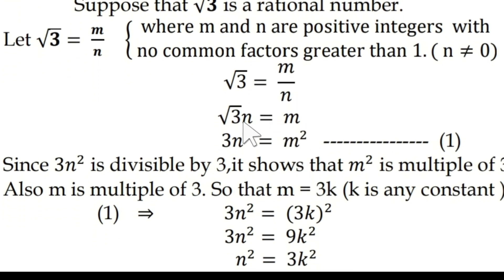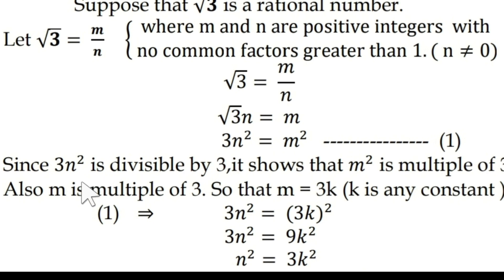Cross multiplying, root 3 times n equals m. To remove the square root, squaring both sides gives 3n² = m². Now 3n² is divisible by 3 — it is 3 times something — so it shows that m² is a multiple of 3. Since m² is a multiple of 3, m is also a multiple of 3.